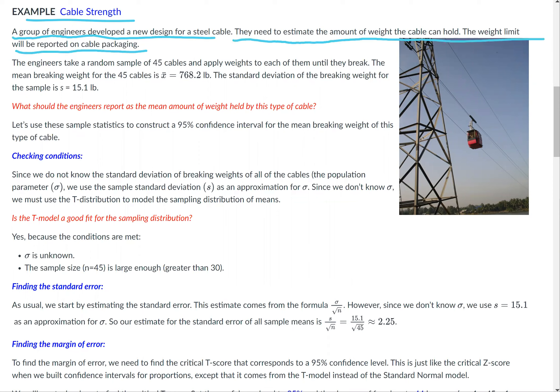The weight limit will be reported on cable packaging. The engineers take a random sample of 45 cables and apply weights to each of them until they break. The mean breaking weight for the 45 cables is x̄ equals 768.2 pounds. The standard deviation of the breaking weight for the sample is 15.1 pounds.